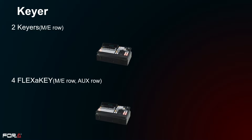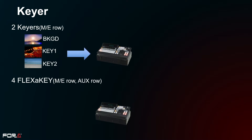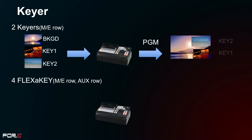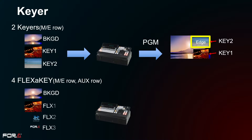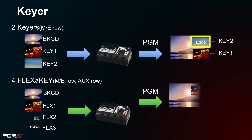The HVS 490 has two keyers and four simple keyers called Flexi Key. The keyers can be programmed to output picture-in-picture to the input source using Key 1 and Key 2. The keyer can be used to adjust gain, clip, transparency, edge function, and mask function. Flexi Key is a simple keyer but, like the keyer, Flexi Key can be used to add PIP and message to the input source.